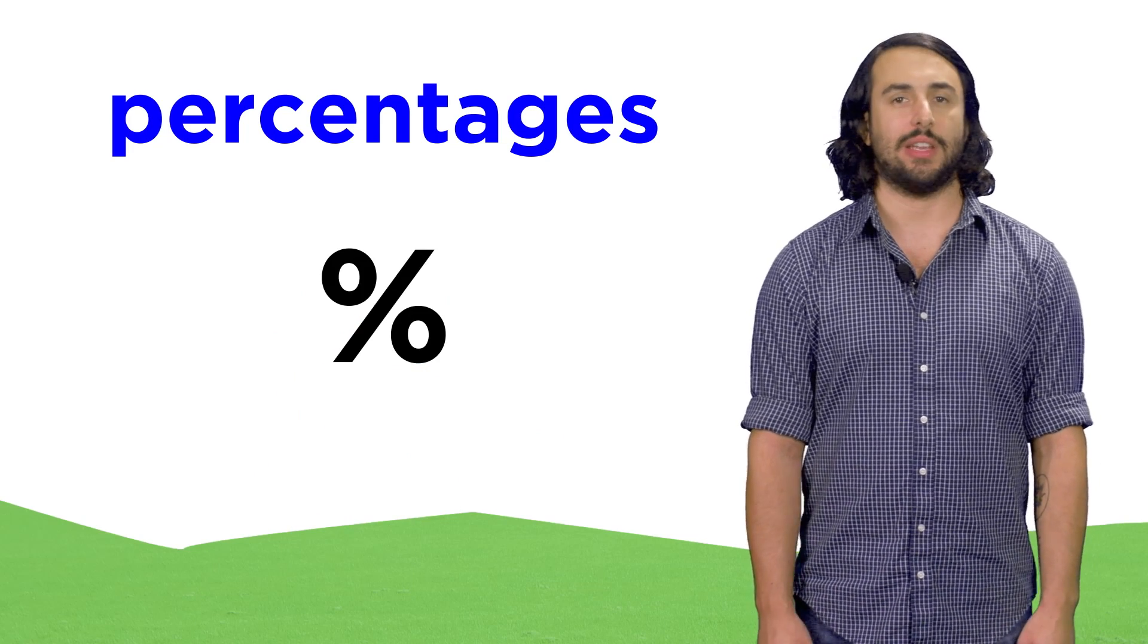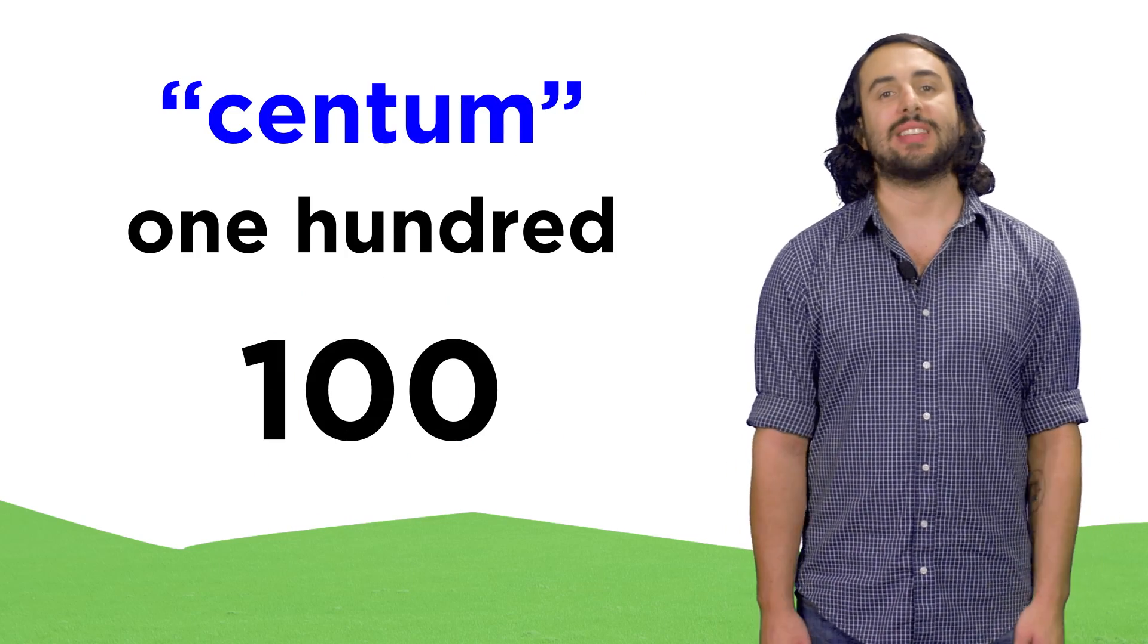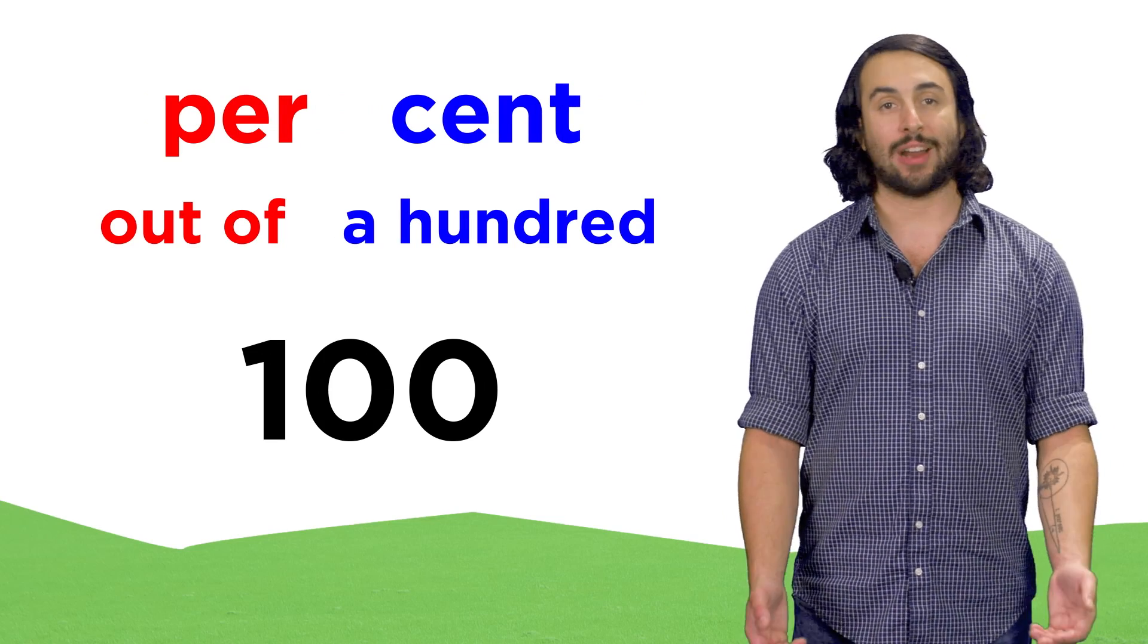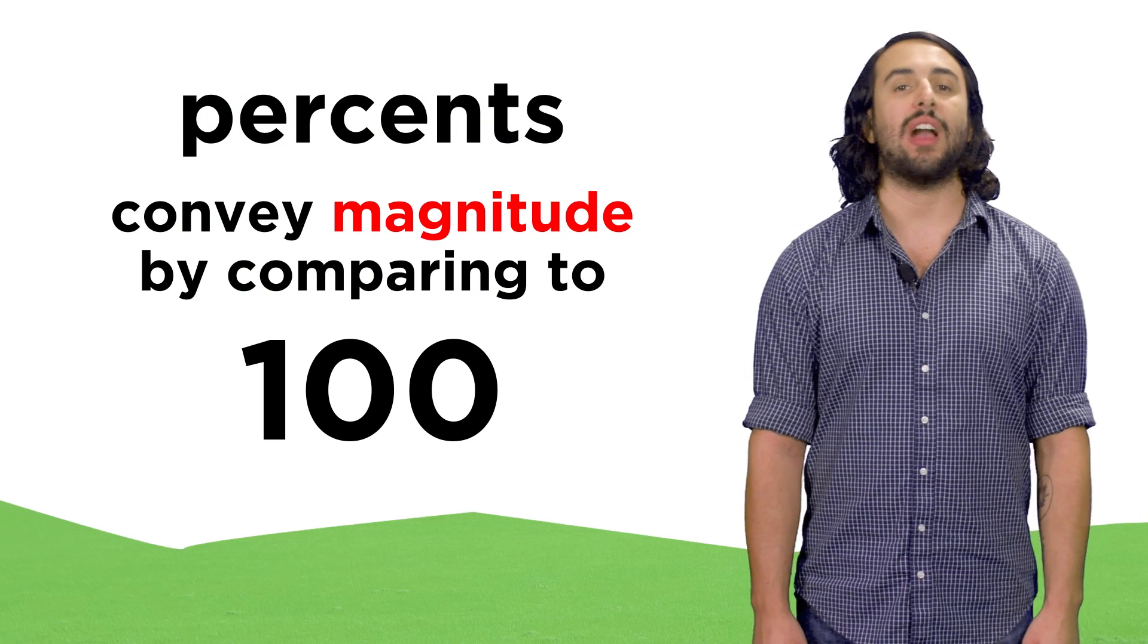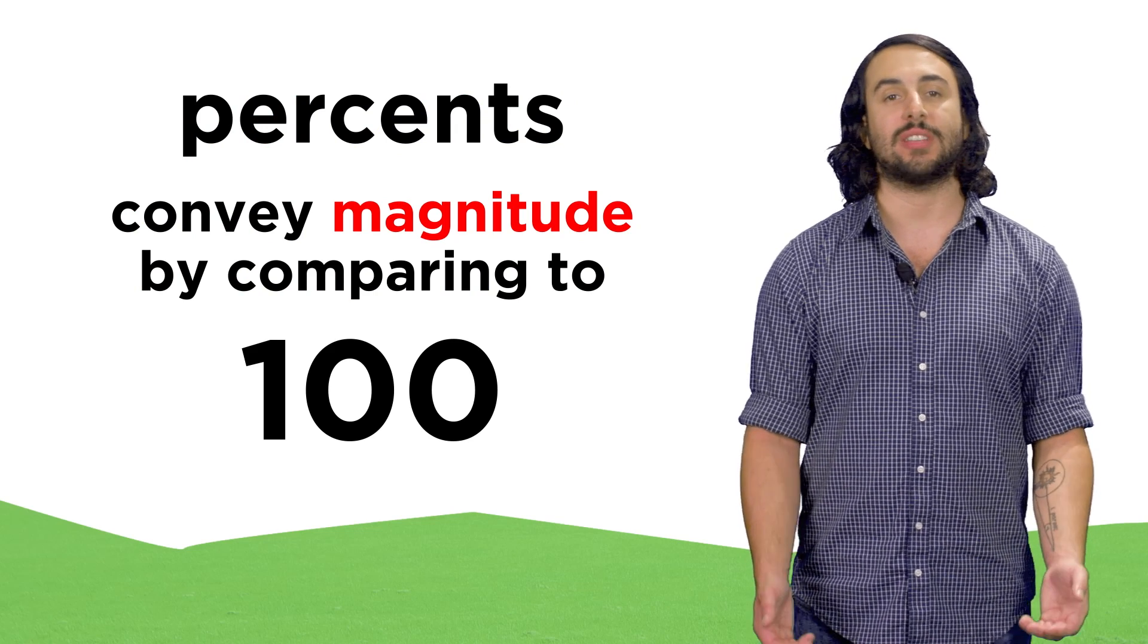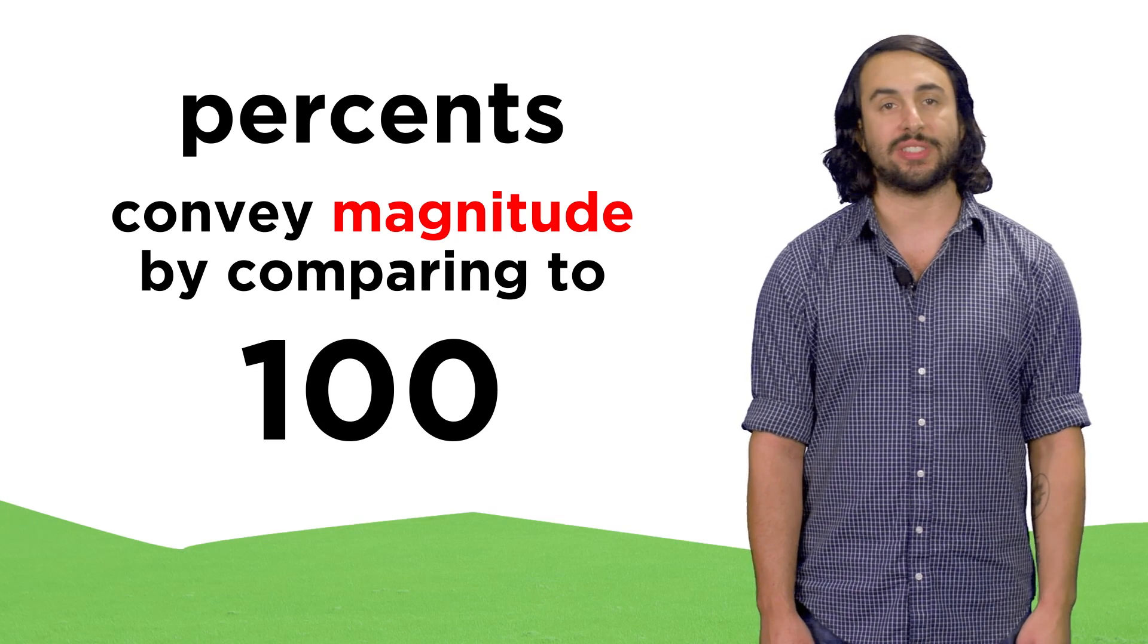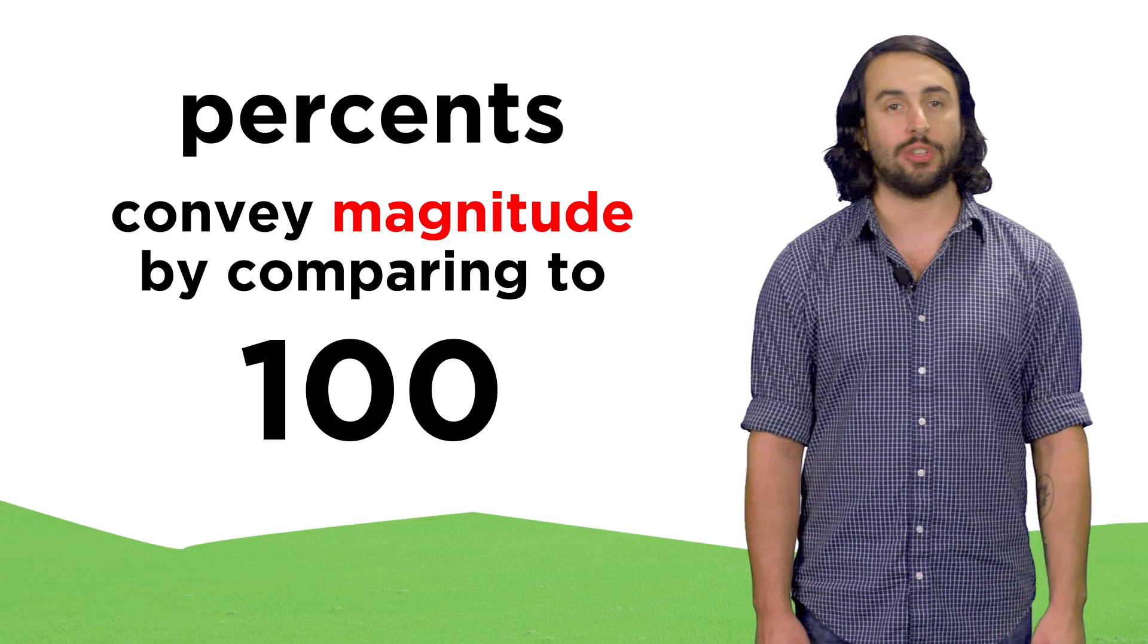So what are these things? Well, in Latin, centum means one hundred, so percent literally means out of a hundred. It's just a way of conveying magnitude by modifying some total into a hundred, and then reporting a value of interest as some fraction of that hundred.